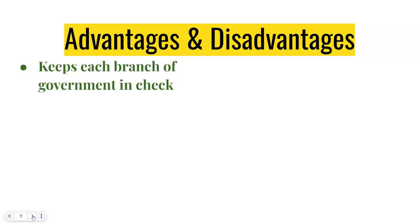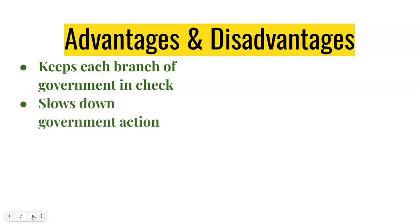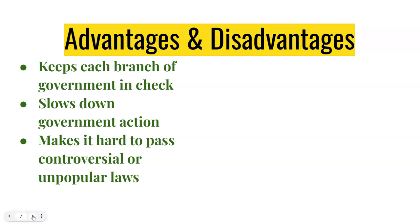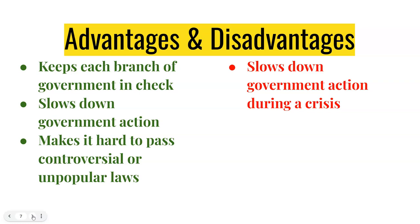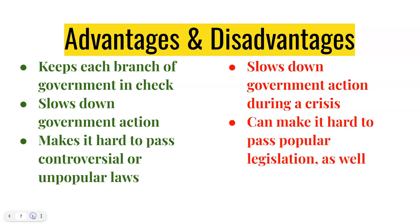What are some advantages to checks and balances? It keeps each branch of government in check, slows down government action — which was a goal of the founding fathers, as they didn't want government to move too quickly and gain too much power — and it makes it hard to pass controversial or unpopular laws. Some disadvantages: slowing down government can be a problem during a crisis when government does need to act quickly, as there are a lot of checks in our system that can make it hard for government to react.